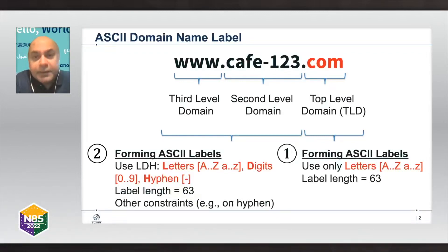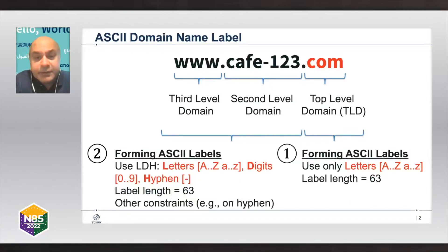However, top level domains are slightly more special. In RFC 1123, it suggests that top level domain names should be alphabetic, meaning they are restricted to letters A–Z and cannot contain digits or hyphens. The label length of 63 still applies.